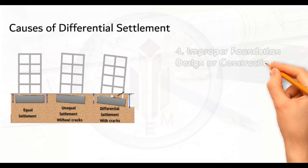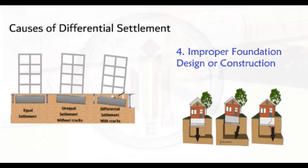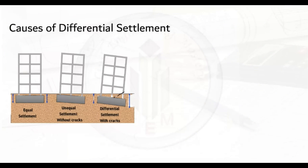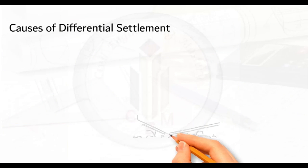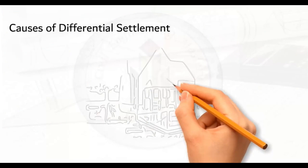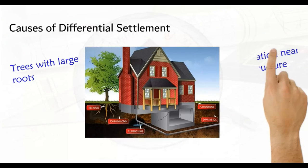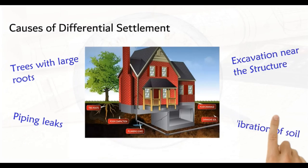The next factor is improper foundation design or construction. If the foundation is not designed or constructed properly, it may not be able to support the load of the building, which can lead to differential settlement. The last major factor is lateral loads caused by wind or earthquakes, which cause differential settlement because lateral loads can cause the soil beneath the foundation to move sideways. Additional causes include poor compaction, trees with large roots, excavation near the structure, piping leaks, and vibration of soil.